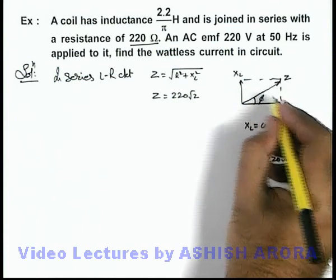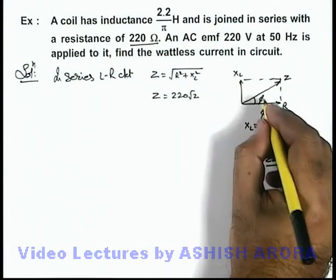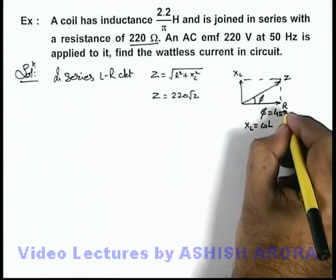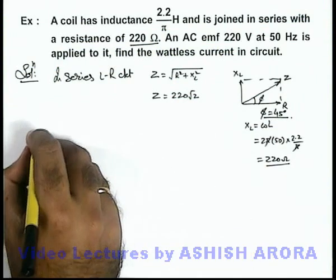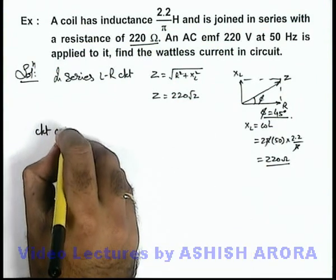And in this situation, if R and XL are equal, the value of the phase angle will be 45 degrees. And in this situation, we can get the value of circuit current.